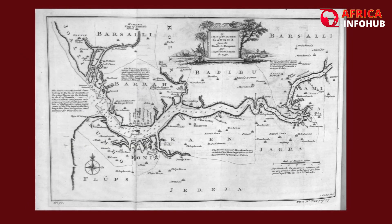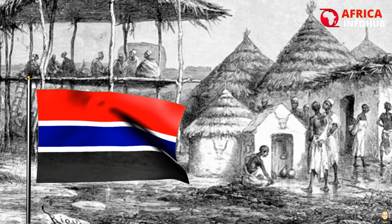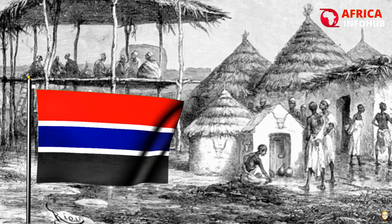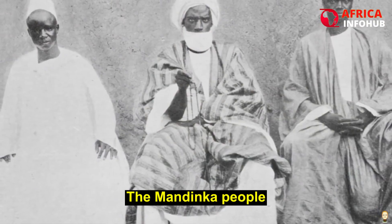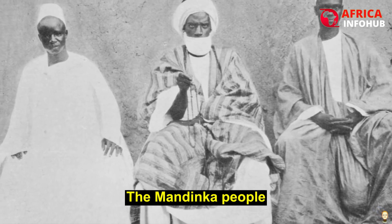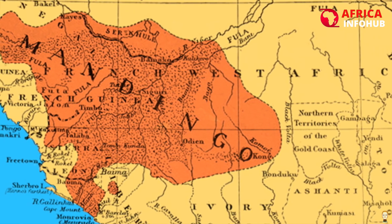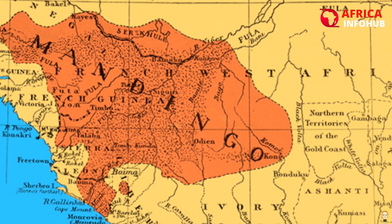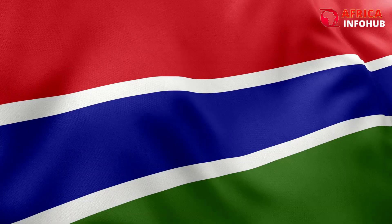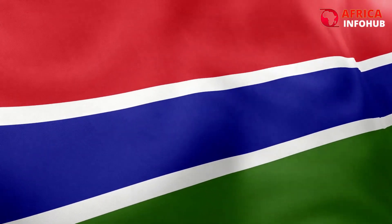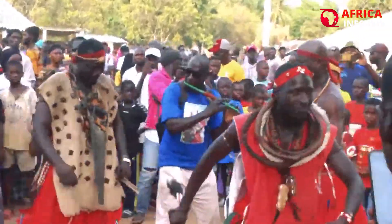Despite the negative consequences of colonialism and the slave trade, the Gambia has a rich cultural heritage shaped by the diverse ethnic groups that have lived in the region for centuries. The Mandinka people, who have inhabited the Gambia for over a thousand years, have a rich cultural and spiritual tradition that is still practiced today. Other ethnic groups, such as the Wolof, Fula, and Jola, have also contributed to the formation of the Gambia, helping to create a diverse and vibrant cultural landscape.